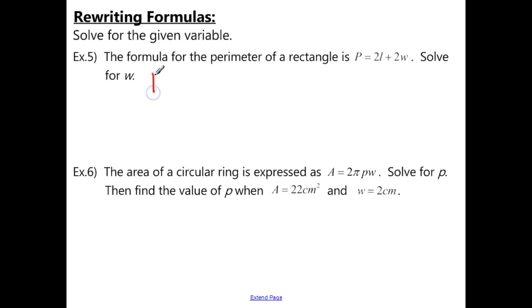So I just want to start off with that formula p equals 2l plus 2w. And then we want to isolate the variable w. So first I'm going to subtract the 2l from both sides. And then we get p minus 2l equals 2w. And then to isolate w, the last thing we need to do is divide by 2.